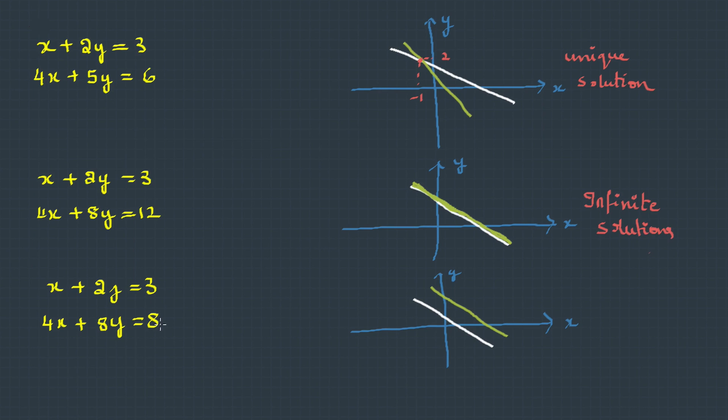Look at the third set of equations. In the graph, these two are parallel lines which can never meet. That means there will be no solution at all.